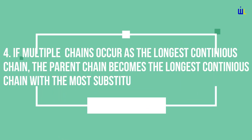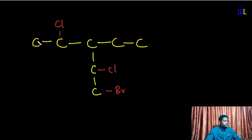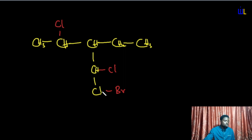Rule number four states that if multiple chains occur as the longest continuous chain, the parent chain becomes the one with the most substituents. Let's look at the screen. Imagine a branched carbon structure. Fill in the hydrogens as appropriate — CH₃ at one end, H₂ groups in the middle. Counting from terminal to terminal in three different directions each gives five carbon atoms.